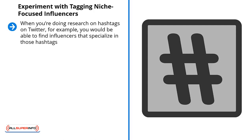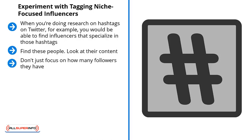Experiment with tagging niche-focused influencers. When you're doing research on hashtags on Twitter, for example, you'll be able to find influencers that specialize in those hashtags. These people love to post content related to certain topics and use a narrow range of hashtags every time they post. Find these people, look at their content — are people retweeting them a lot? Are they getting a lot of engagement? Are people responding?